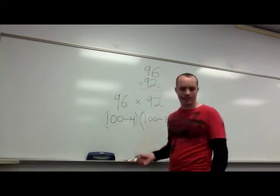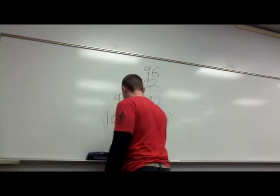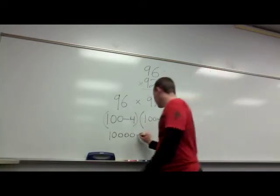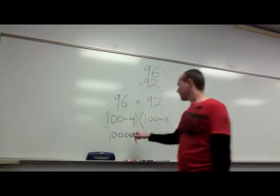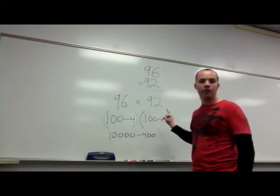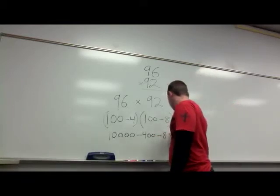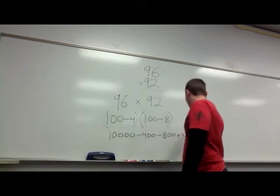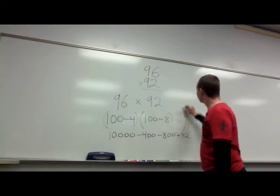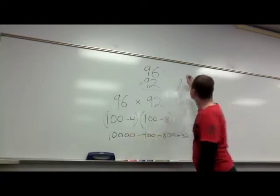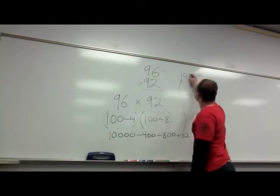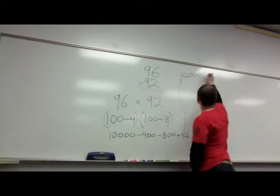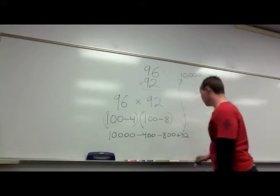100 times 100 is 10,000. Negative 4 times 100 is negative 400. Now 100 times negative 8 will give me negative 800. Negative 4 times negative 8 is a positive 32. Let's bring this all the way back up here. Here I have 10,000. I want to put these two together. They both have a minus sign, so I just want to combine them together and I get 1,200. Plus 32.